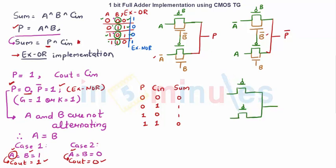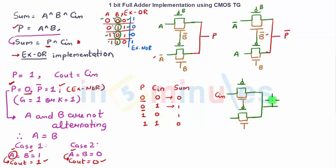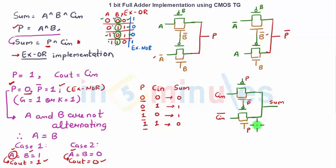These are my PMOSs; I will connect the NMOSs in parallel. Making the propagate signal the select signal: if propagate is 0, sum is equal to C_in. Propagate 0 means for PMOS this becomes propagate_bar. In the other case, when propagate is 1, sum is equal to C_in_bar. So propagate_bar goes to PMOS and propagate goes to NMOS. This is the sum implementation.